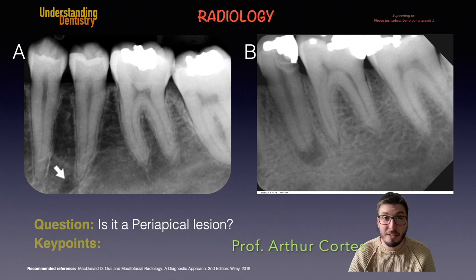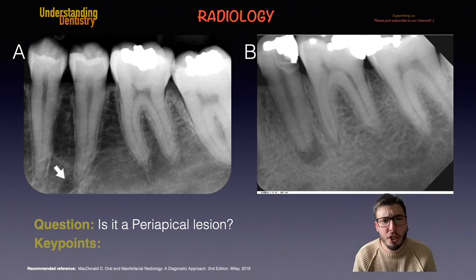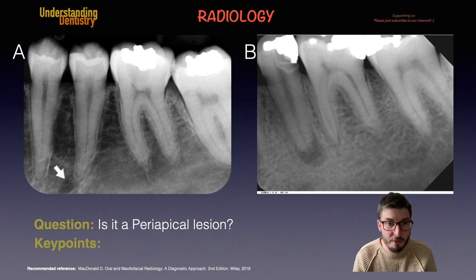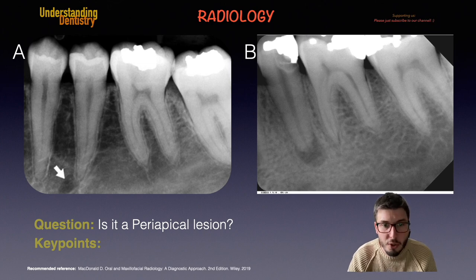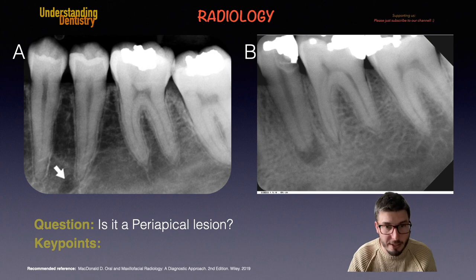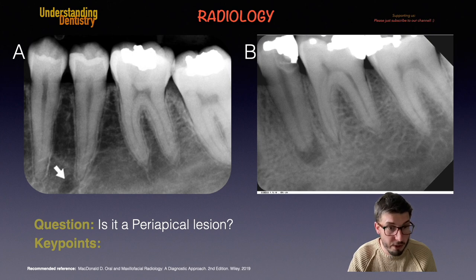Hello guys, and welcome to this video to discuss how to make sure that we are actually seeing periapical lesions and not, for example, the superimposition of any other structures on periapical radiographs. Before we continue, I'd like to remind you that this video is to orientate your studies and not to replace your studies. There's a recommended reference book from Professor MacDonald, which is on the screen now.